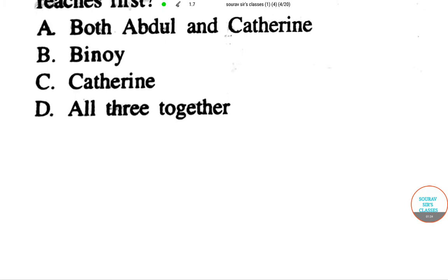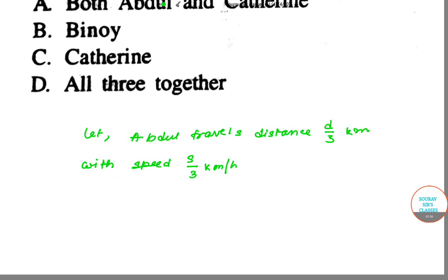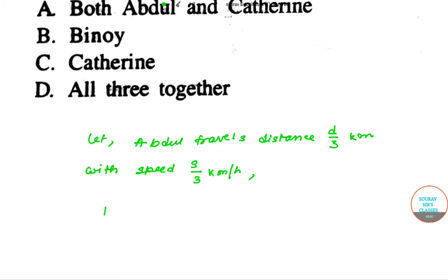Now first of all, this is a little confusing, so let me start with: let Abdul travel distance d/3 km with speed s/3 km per hour.